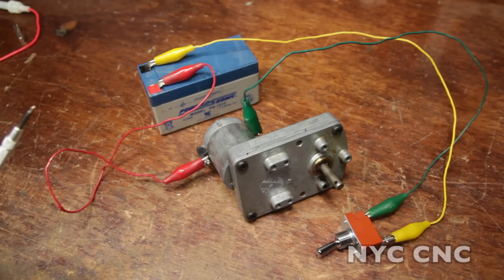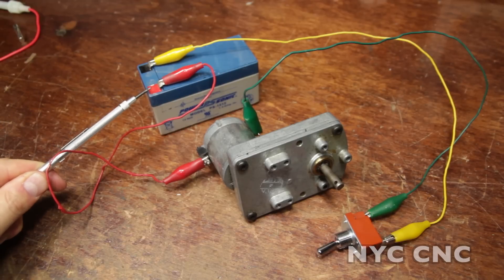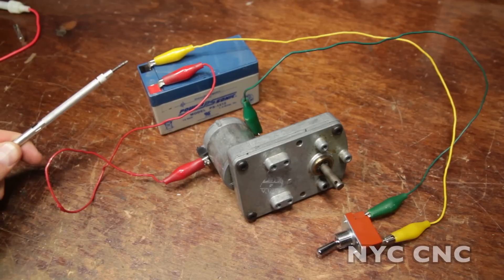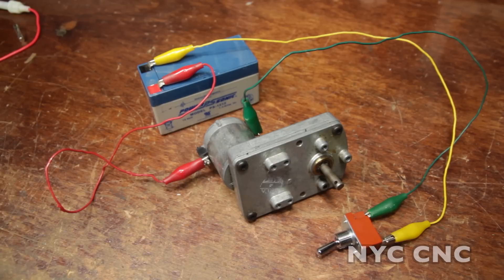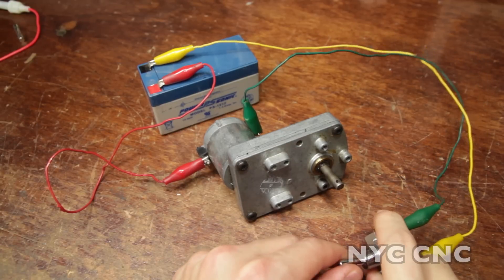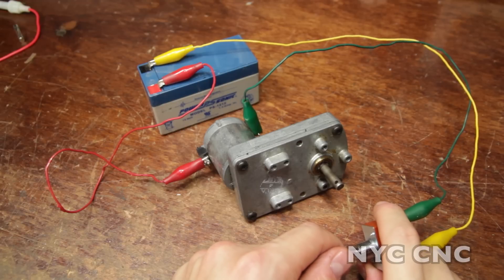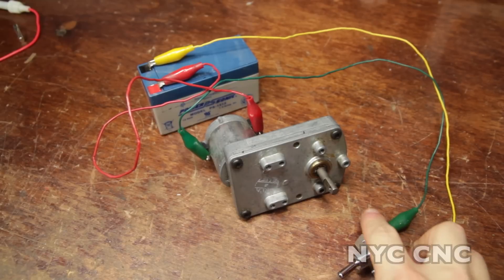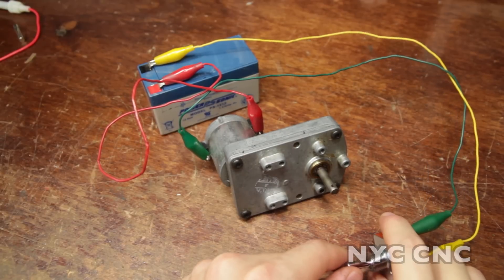Switches are pretty straightforward. Connect the positive tab of your power source to one terminal of the motor. Connect the negative through the switch. Turn the switch on. You'll notice this turns clockwise. We simply swap the leads. Now you notice counterclockwise.